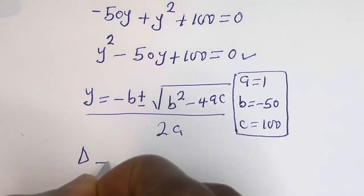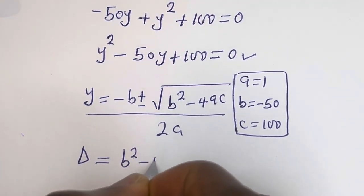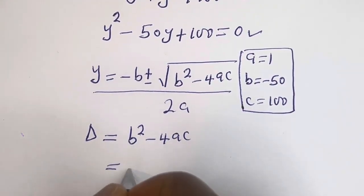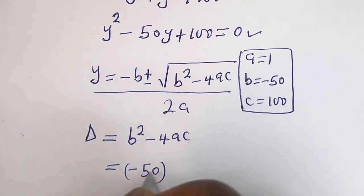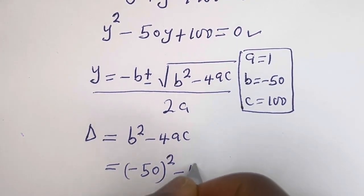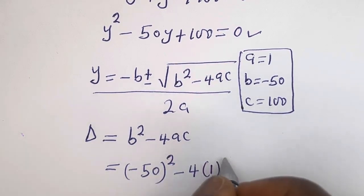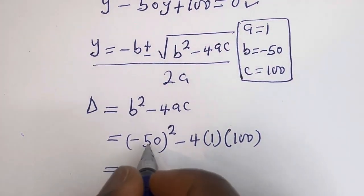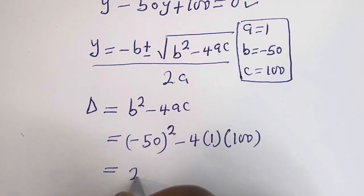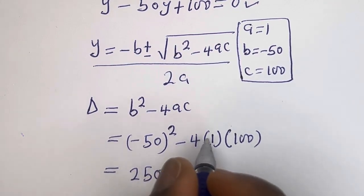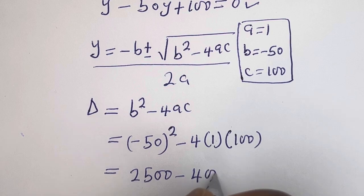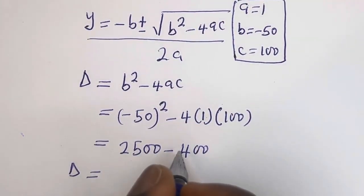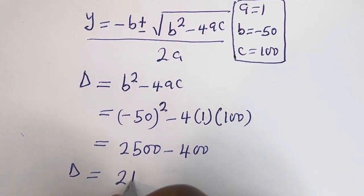The discriminant d is equal to b squared minus 4ac. That is (minus 50) squared minus 4 multiplied by 1 multiplied by 100. This is equal to 2500 minus 400. So discriminant d is equal to 2100.